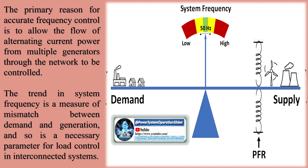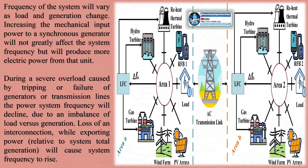Loss of an interconnection while exporting power relative to system total generation will cause system frequency to rise. Automatic Generation Control AGC is used to maintain scheduled frequency and interchange power flows. Control systems in power plants detect changes in the network-wide frequency and adjust mechanical power input to generators back to their target frequency. This counteracting usually takes a few tens of seconds due to the large rotating masses involved.